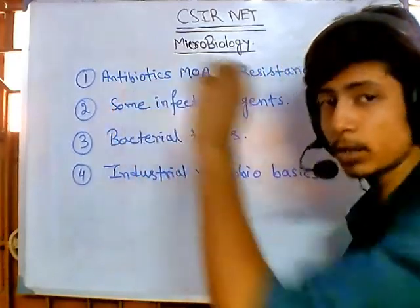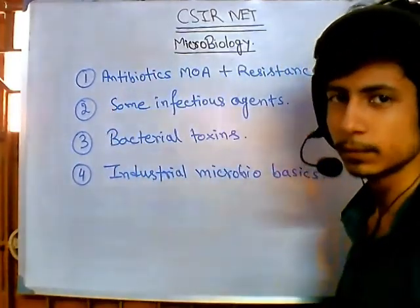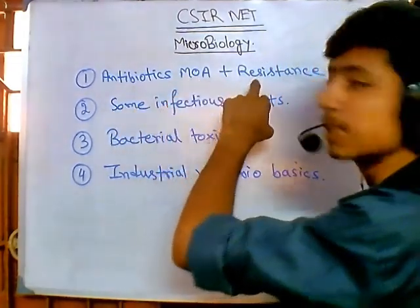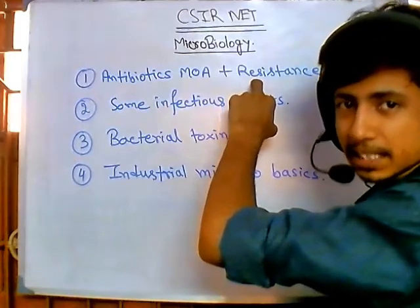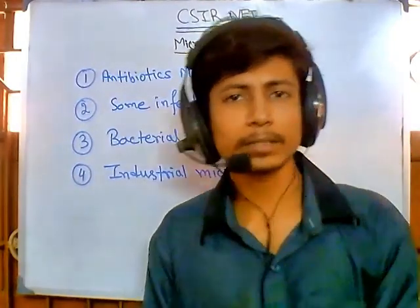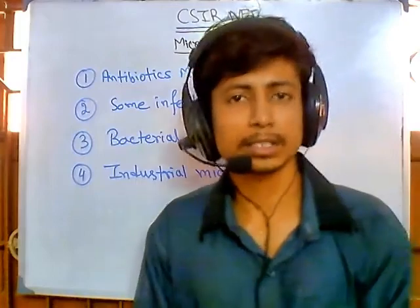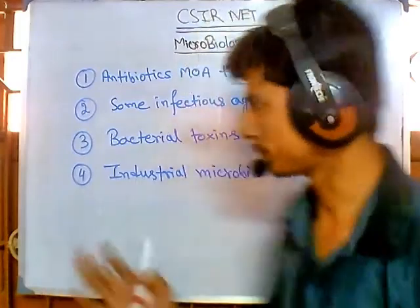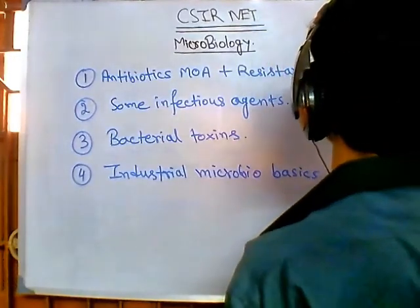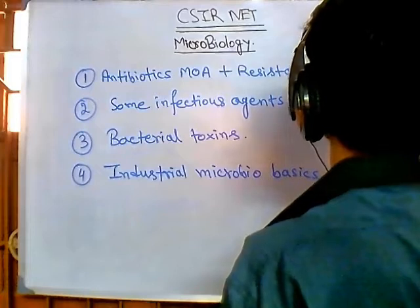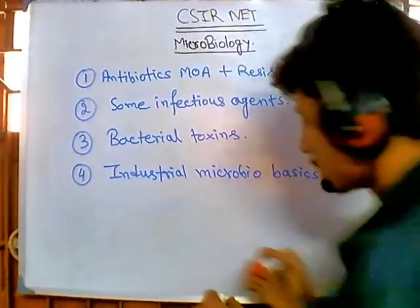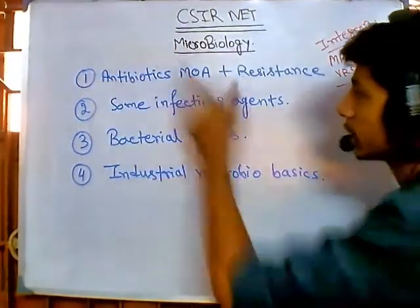You're going to get at least one question from antibiotics — most of the time they ask questions from this part. Antibiotic mode of action along with bacterial resistance is key. All types of antibiotics are covered: cell wall synthesis inhibitors, protein synthesis inhibitors, nucleic acid inhibitors, and more. Along with that, you need to learn terminologies like MRSA, VRSA, and integrons.